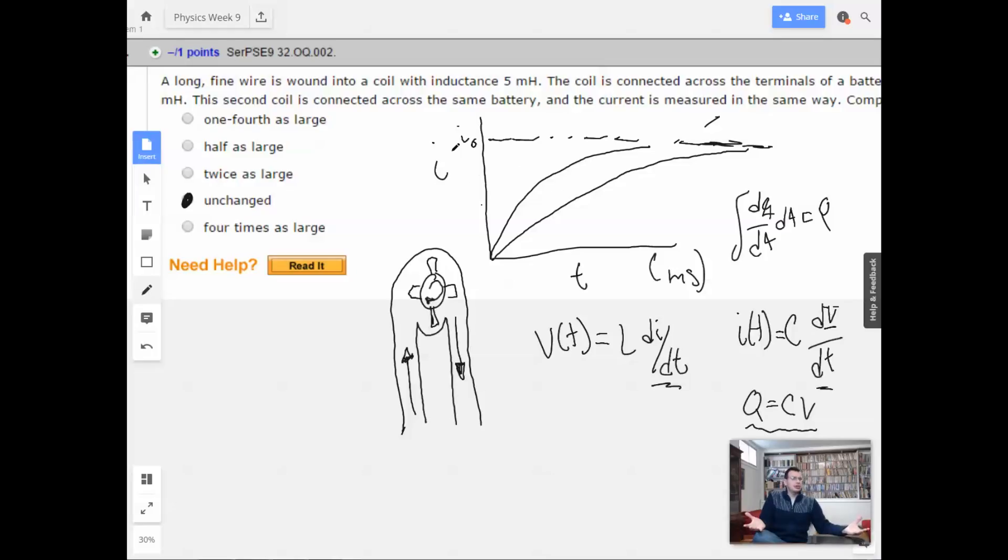And it's just because you're talking about millihenries, which are, it's a normal-sized inductor. It's just going to be unchanged. So that's what I'm saying for problem one.